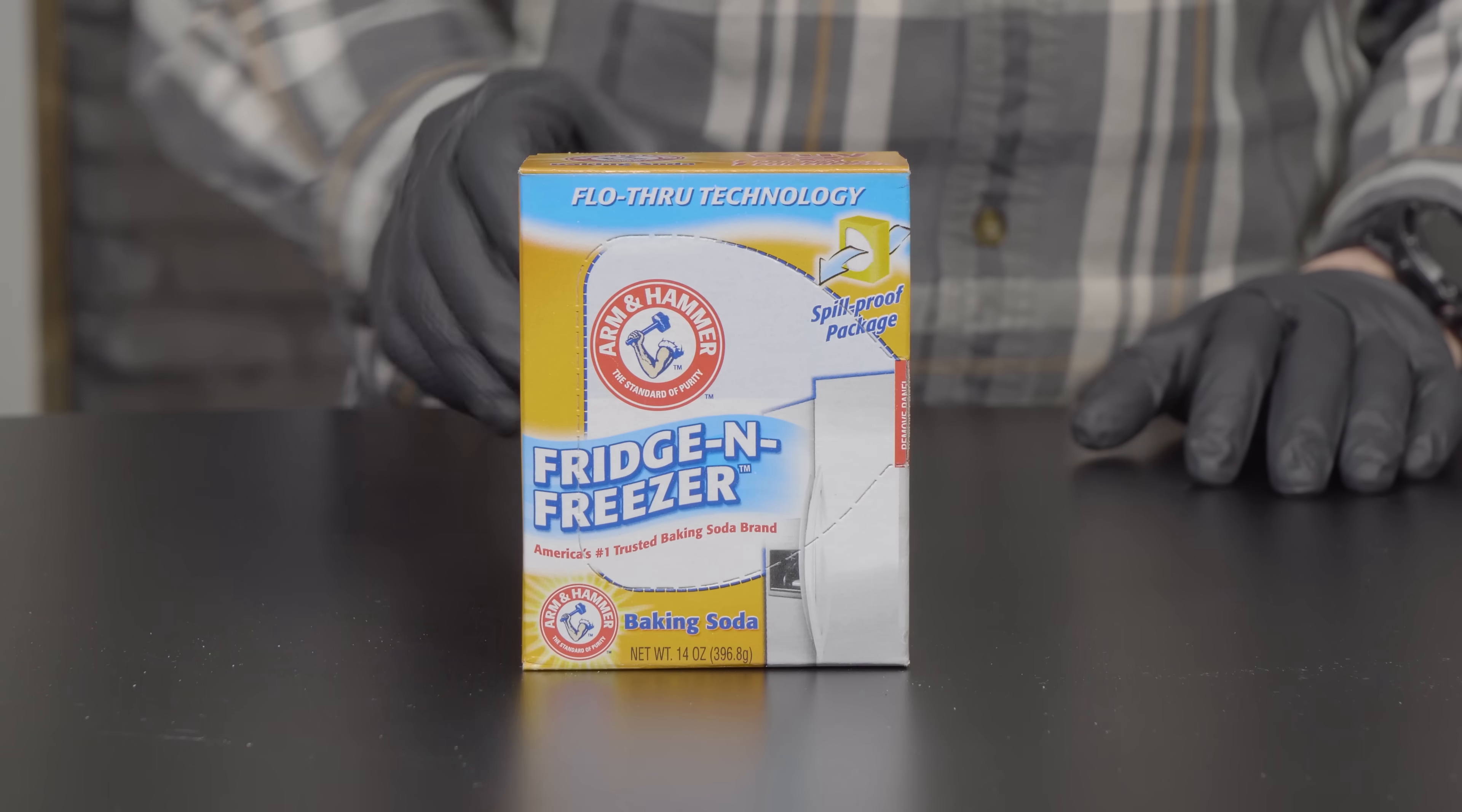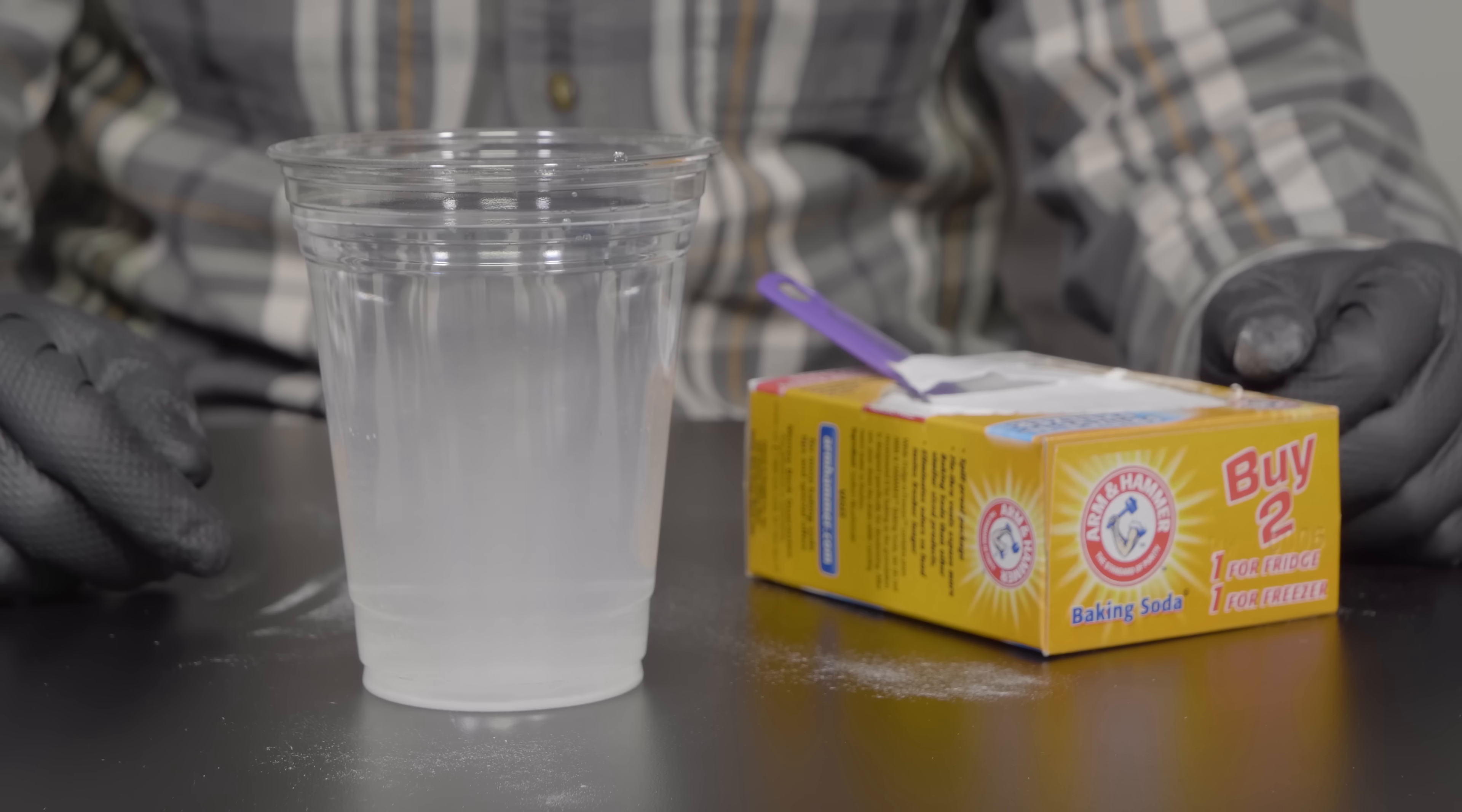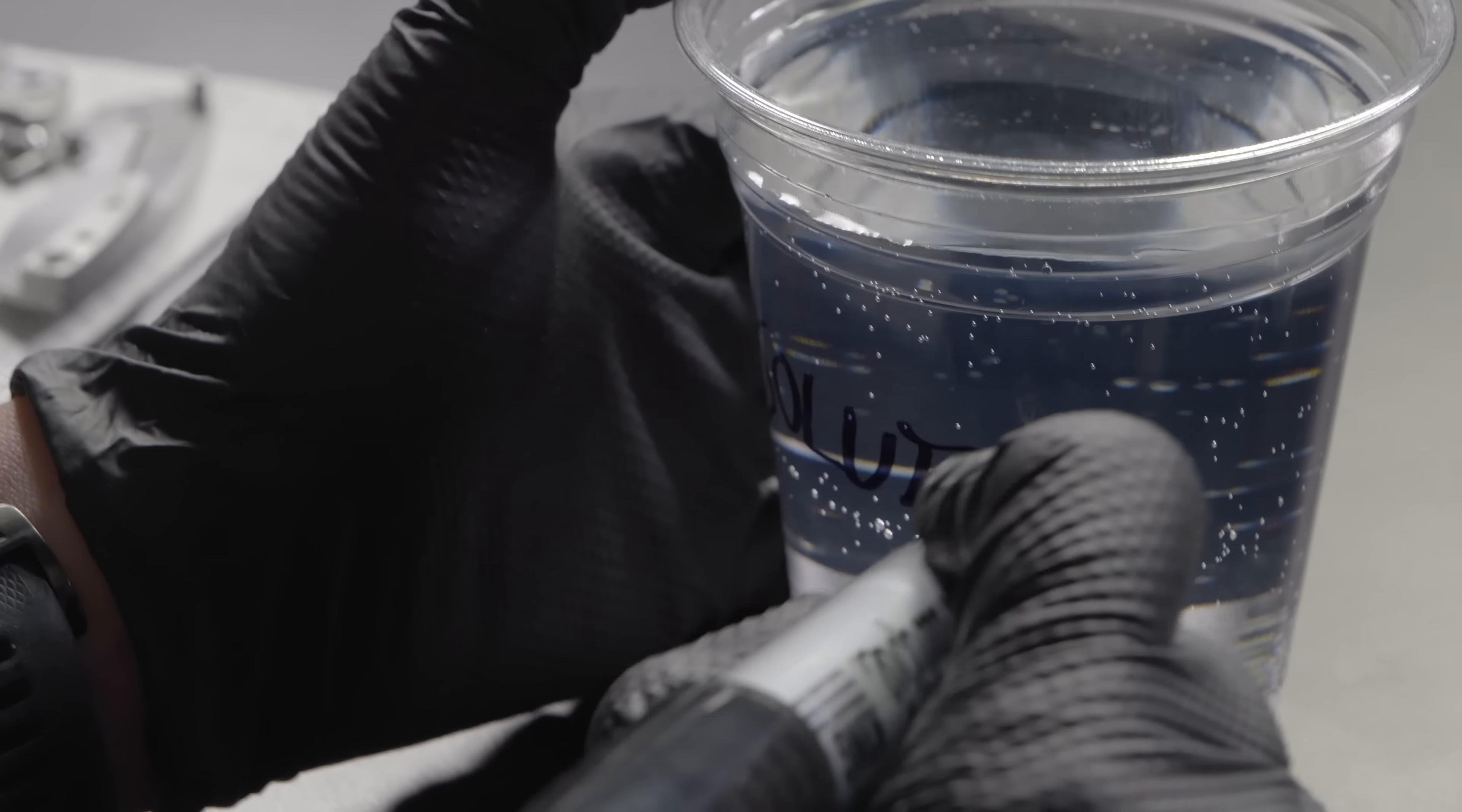Next we're going to mix up our solution that will actually be anodizing in. So we're going to take two cups of water, two tablespoons of baking soda for about an eight to one mixture, and we're going to let the baking soda completely dissolve in the water. Here you can also use trisodium phosphate or TSP. You can also use borax. We tried all three out and we found we pulled more vibrant colors with the baking soda. So you want to make sure that you mark your solution and your rinse water to not get them mixed up.